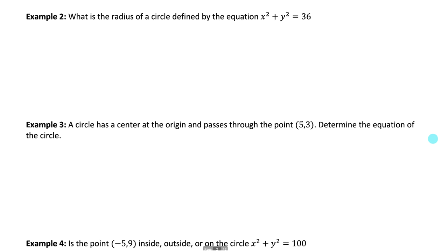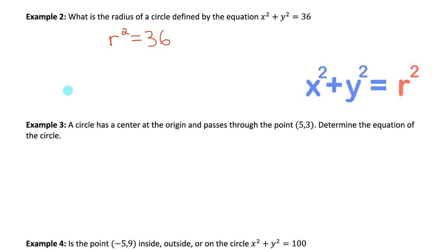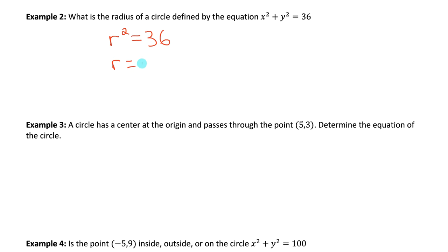Example two: what is the radius of a circle defined by x squared plus y squared equals 36? The number on the right side is what r squared equals, so r squared equals 36. To isolate r, we do the inverse of squaring, which is square rooting: r equals the square root of 36, which is 6. So the radius of this circle is 6 units.